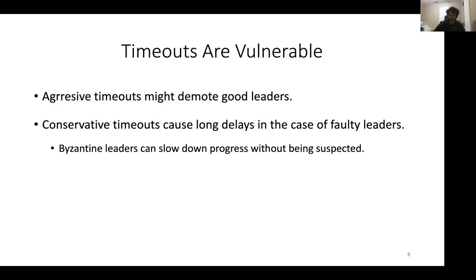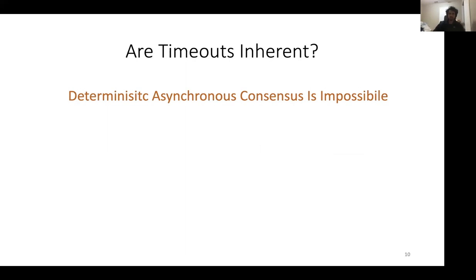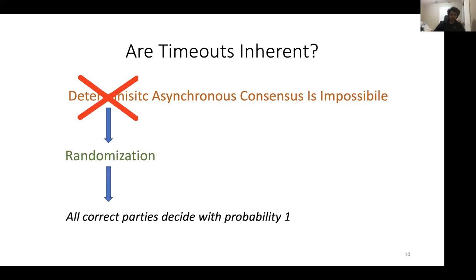Timeouts are also open to DDoS attacks, and the attacker does not need to control the entire network — it is enough to be able to adaptively delay the current leader in order to avoid progress. Luckily, timeouts are not inherent, and another way to circumvent the impossibility result is to use randomization. In a randomized consensus protocol, we usually require deterministic safety and termination with probability one.